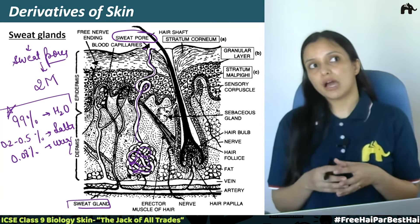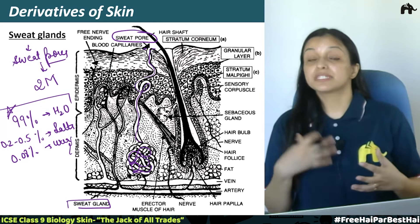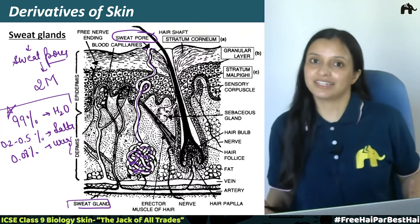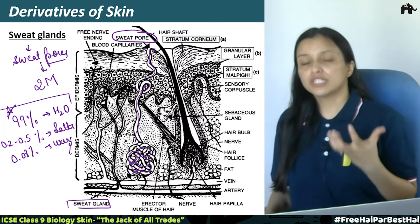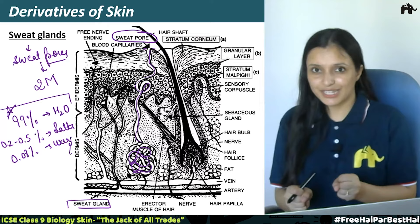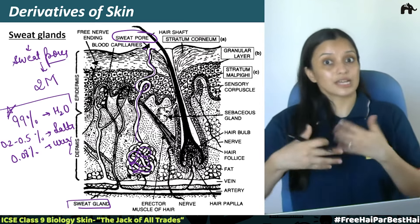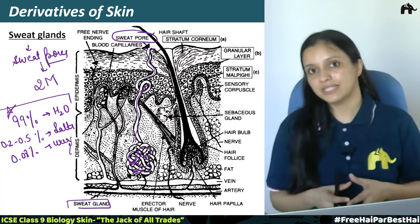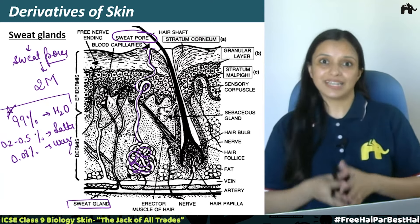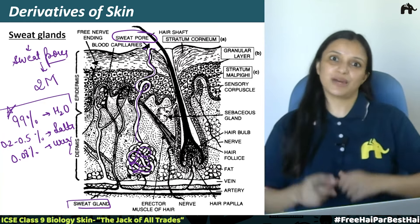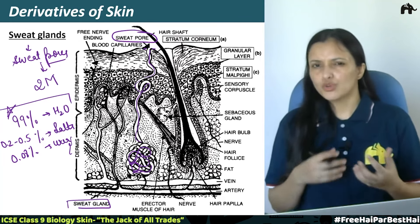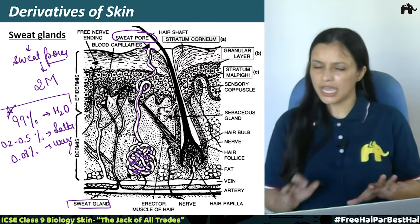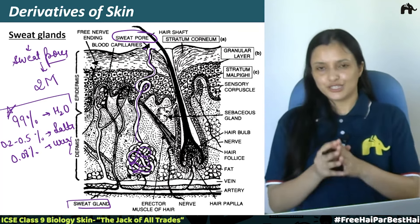The sweat glands are actively secreting a small amount continuously, but when you are very warm or exercising a lot, they actively produce more sweat. Sometimes cold sweat also occurs — when you are very scared, excess sweat can be produced along with salt loss, which can cause nausea and severe pain. The sweat glands are present in our dermis, along with most other derivatives of the skin. The epidermis, by contrast, is a dead layer of cells.